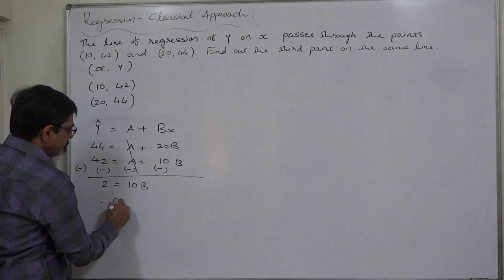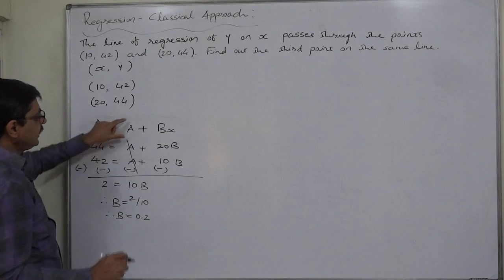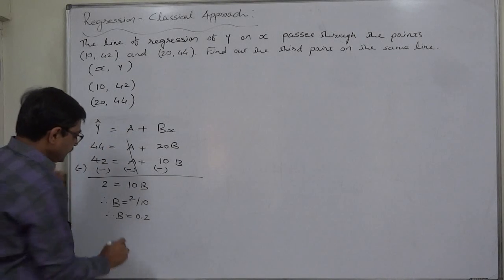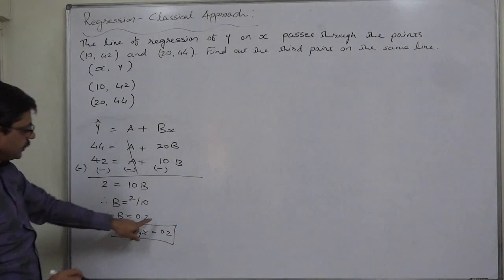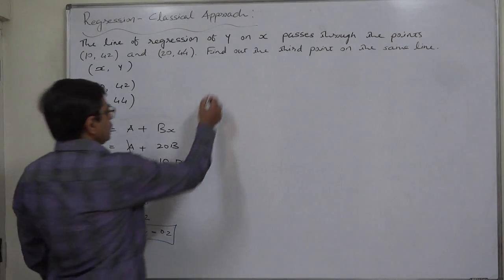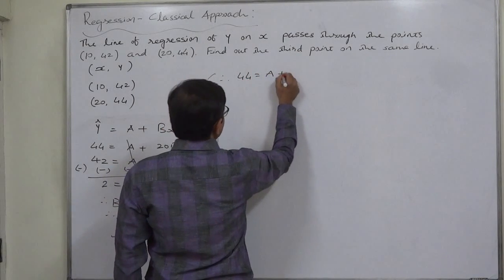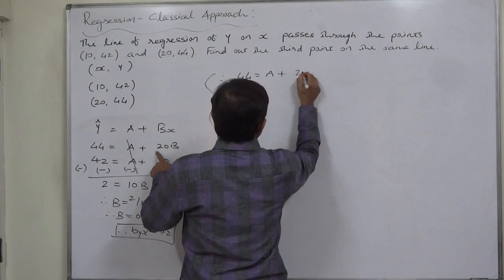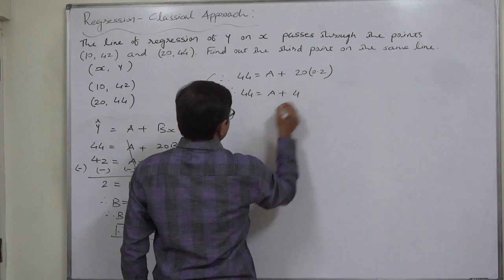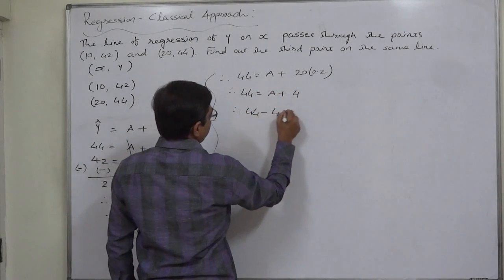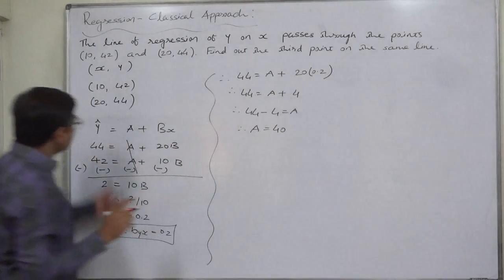That means b = 2/10, that means b = 0.2. And in the equation of line of regression of y on x, b stands for byx. Now we can substitute this value of b in any of these two equations to get the value of a. Therefore, 44 = a + 20 × 0.2, that means 44 = a + 4, therefore 44 - 4 = a, and therefore a = 40. So we have all the two ingredients of the equation of line of regression.